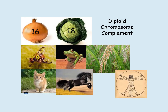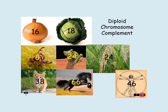Each organism has a different diploid chromosome complement. For humans it is 46. For an onion it is 16 in its diploid cells, so it would have 8 in its gametes. The answers for the others are: lettuce would have 9 in its sex cells, the bee would have 4, the frog would have 12, wheat would have 12, the cat would have 19, the horse would have 33, and a human would have 23 in its sex cells and gametes.